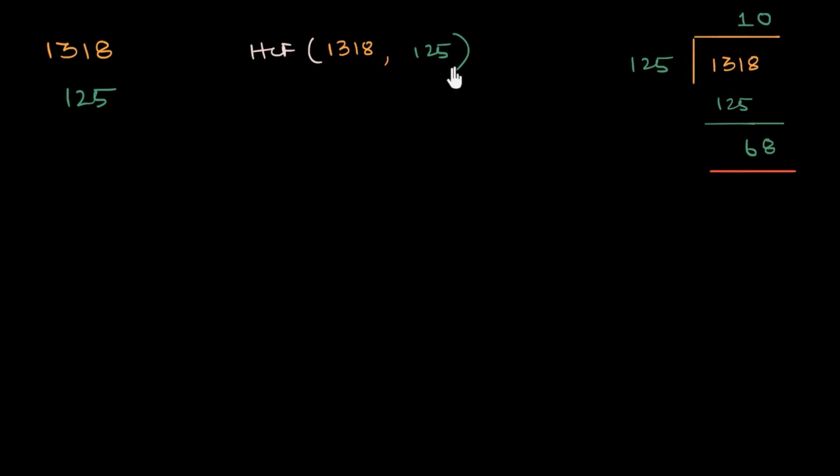So 125 is not my HCF, but then I can find now the HCF of the smaller number and the remainder when I divide the bigger number by the smaller number, which is 68. So 68.